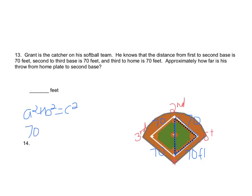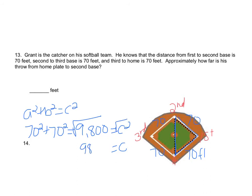We do 70 squared plus 70 squared equals C squared, which gives us 9,800 equals C squared. Taking the square root, we get C equals 98.994. Rounding to the nearest hundredth, we look at the 4 — it stays the same — so the answer is 98.99 feet.